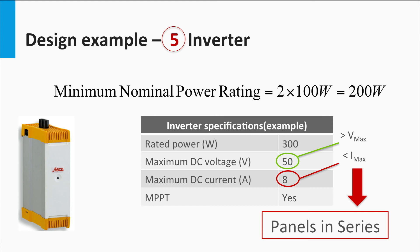On the other hand, the maximum DC input current for the inverter is less than the maximum current but greater than the short circuit current. Thus, we can say that the ideal panel configuration could be in series.